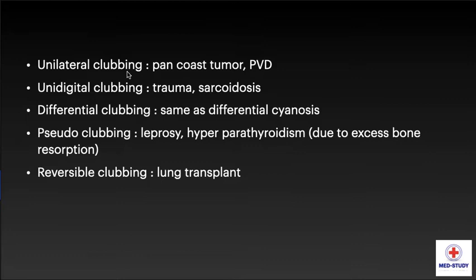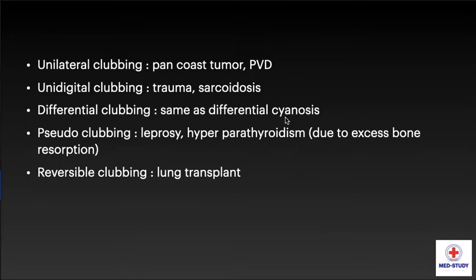Unilateral clubbing is seen in Pancoast tumors, peripheral vascular disease, etc. Unidigital clubbing is seen in trauma and sarcoidosis. Differential clubbing is seen in conditions that are the same as differential cyanosis — please check out the previous video on cyanosis for details. Pseudoclubbing is seen in leprosy and hyperparathyroidism due to excess bone resorption. Reversible clubbing is seen in lung transplant.